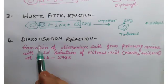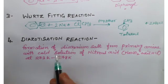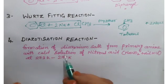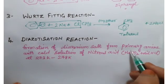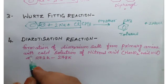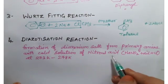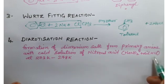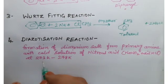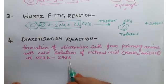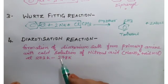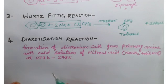Next, diazotization reaction — again very important. Diazotization is the formation of a diazonium salt from a primary amine using a cold solution of nitrous acid, that is NaNO2, and dilute HCl (mineral acid), at 273 to 278 Kelvin, meaning 0 to 5 degrees Celsius — very cold conditions. The formation of diazonium salt is called diazotization reaction.